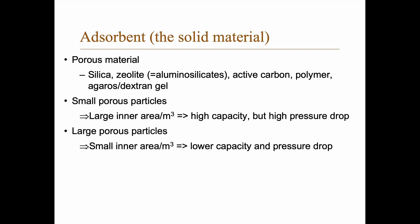The adsorbent is typically a porous material. The porous material could be silica or zeolite — aluminum silicates, which is what you actually find in washing powder. Active carbon is another option, as are polymers. You can also have a gel consisting of agarose or dextran or something like that.